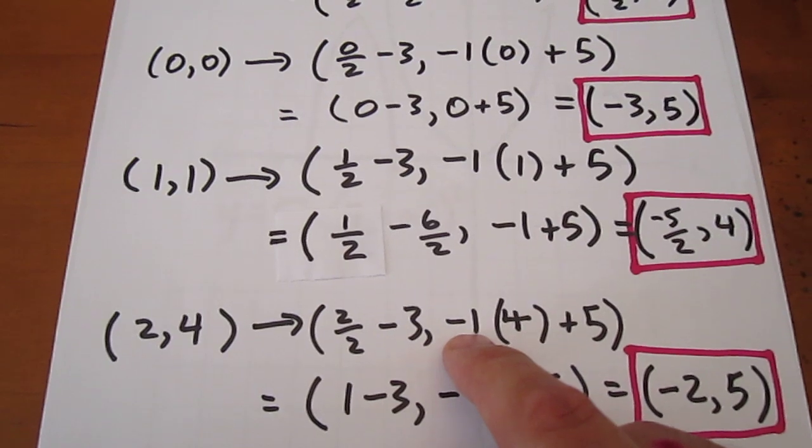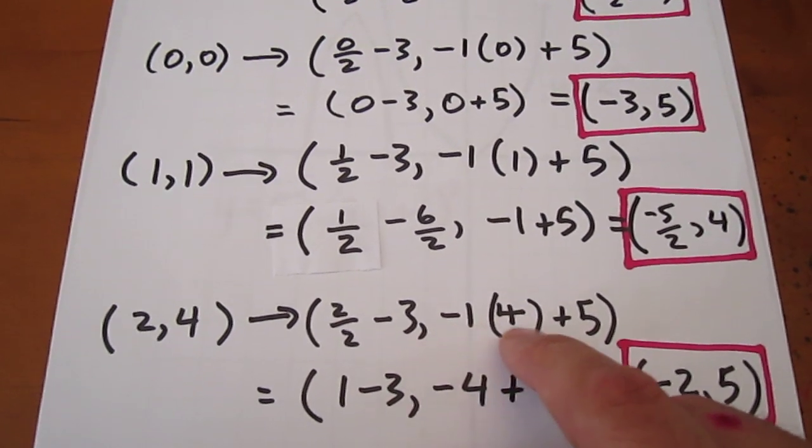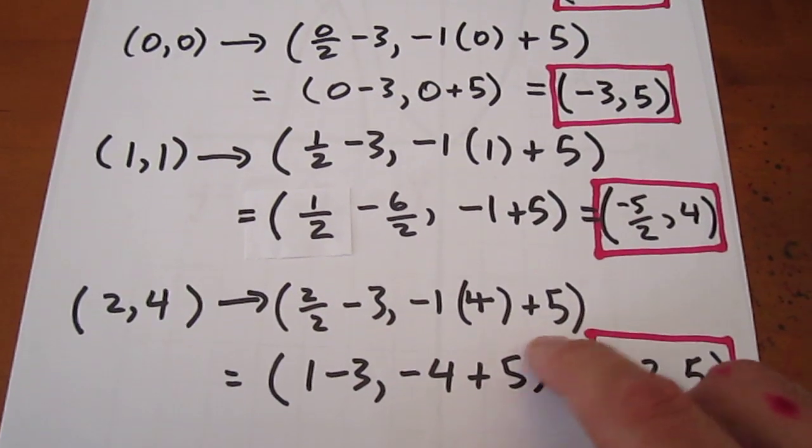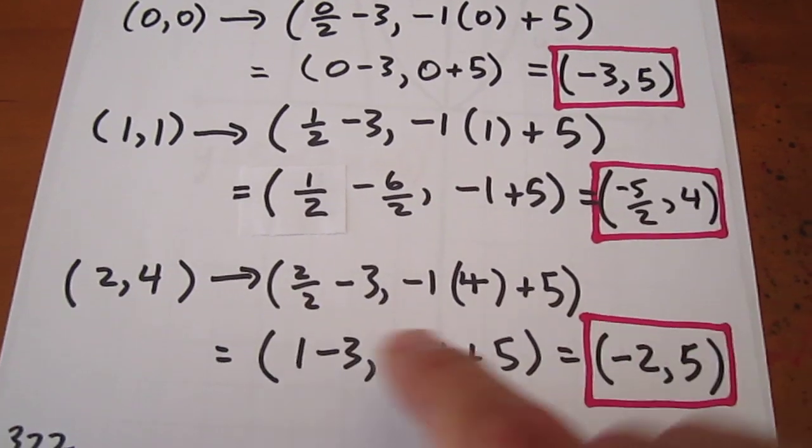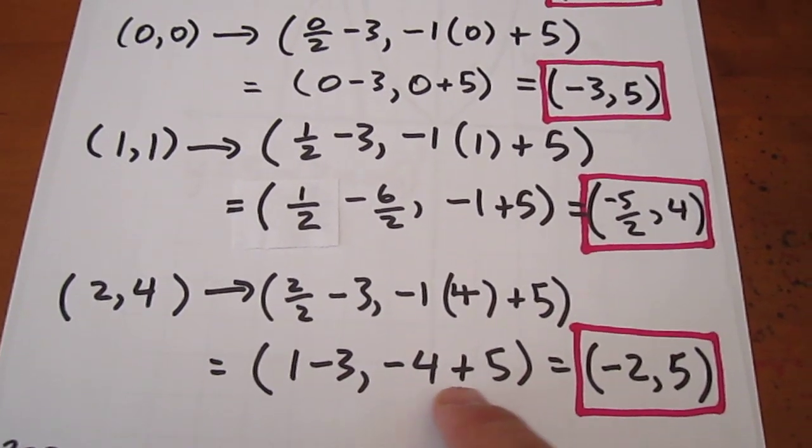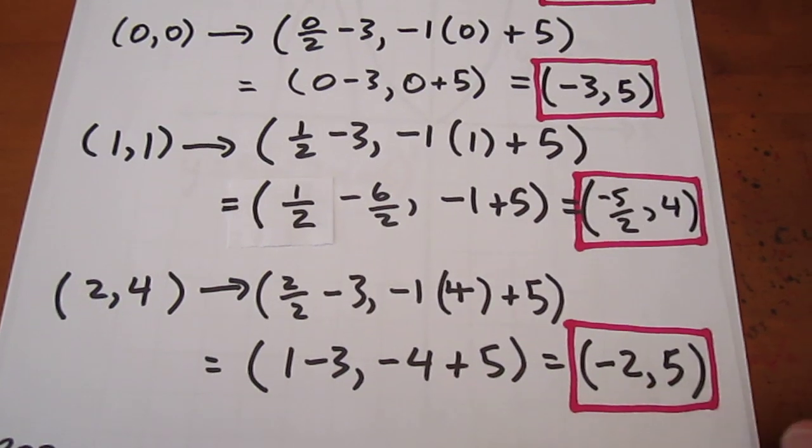Then we have a, which is negative 1 from a previous page, times the y coordinate in question, which is 4, plus c, which we determined to be 5 on a previous page. And when we bash this out algebraically, we get 1 minus 3, comma negative 4 plus 5, that becomes negative 2, 5.